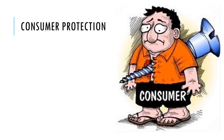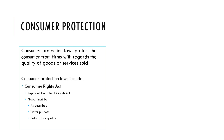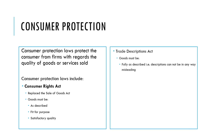Consumer protection law is really to stop consumers from being exploited. Countries typically have types of law that protect consumers with regards to the quality of goods or services sold. Consumer protection laws typically include consumer rights to replacing goods if they're faulty, making sure that goods are fit for purpose, do what they're described to do, and are of satisfactory quality. We also have things like trade descriptions acts, which means that goods or services must be described in a way that is not misleading.